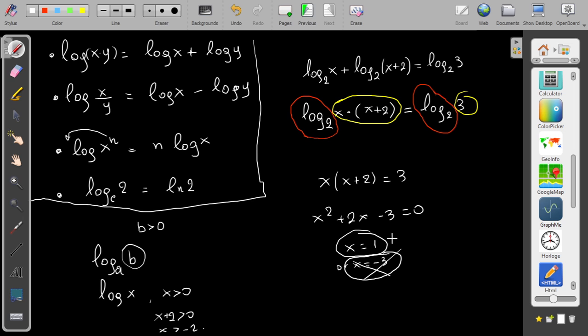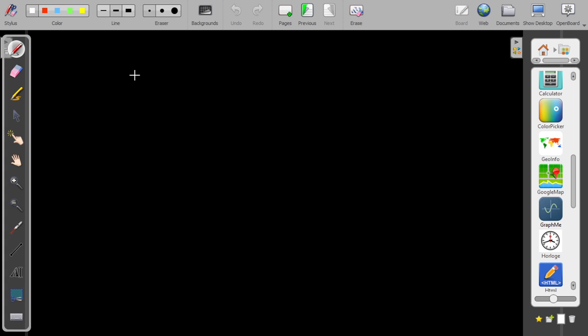So x = -3, it's rejected, so the only correct is 1. Let me have another one.